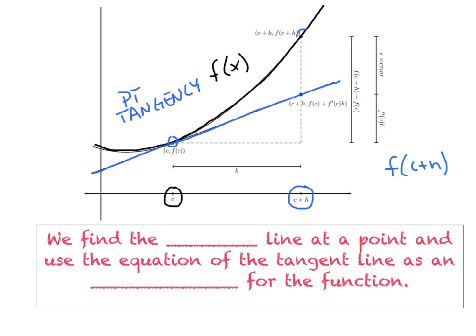Here's the true answer that we're shooting for, and here's what the tangent line would tell us. And what you'll notice is it's pretty close. The gap between those two points is the error that's involved. And as long as the error stays pretty small, we're going to be happy. We find the tangent line at a point, and we use this equation of the tangent line as an approximation for the function.